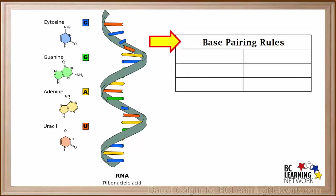The thing about bases we do need to know well are the base pairing rules. We'll start by reviewing the pairing rules in DNA. Remember cytosine always pairs up with guanine, and guanine with cytosine. And adenine always pairs up with thymine.